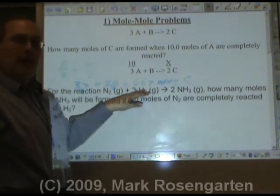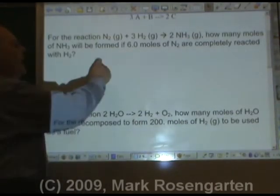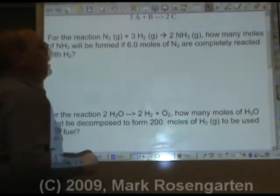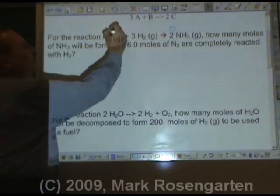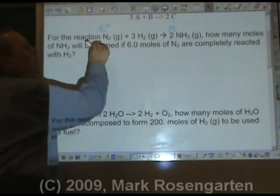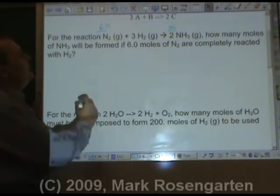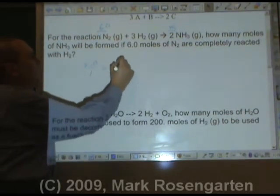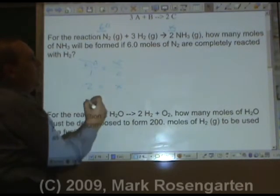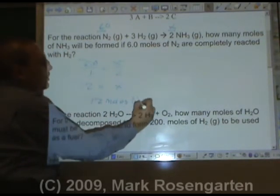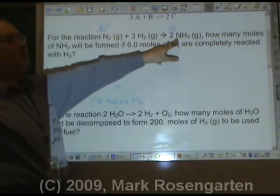When you round your answer off to stoichiometry problems, you're going to use the number of sig figs in your original amount. Here are some more examples. For the reaction N₂ plus 3H₂ forms 2NH₃, how many moles of NH₃ are formed if six moles of N₂ are completely reacted with H₂, which means we have enough H₂ to get the job done? So 6.0 is to one as X is to two. Six times two is twelve equals X. Twelve moles of NH₃. This makes sense because it's a one to two ratio. Whatever N₂ is, NH₃ is going to be twice as much.